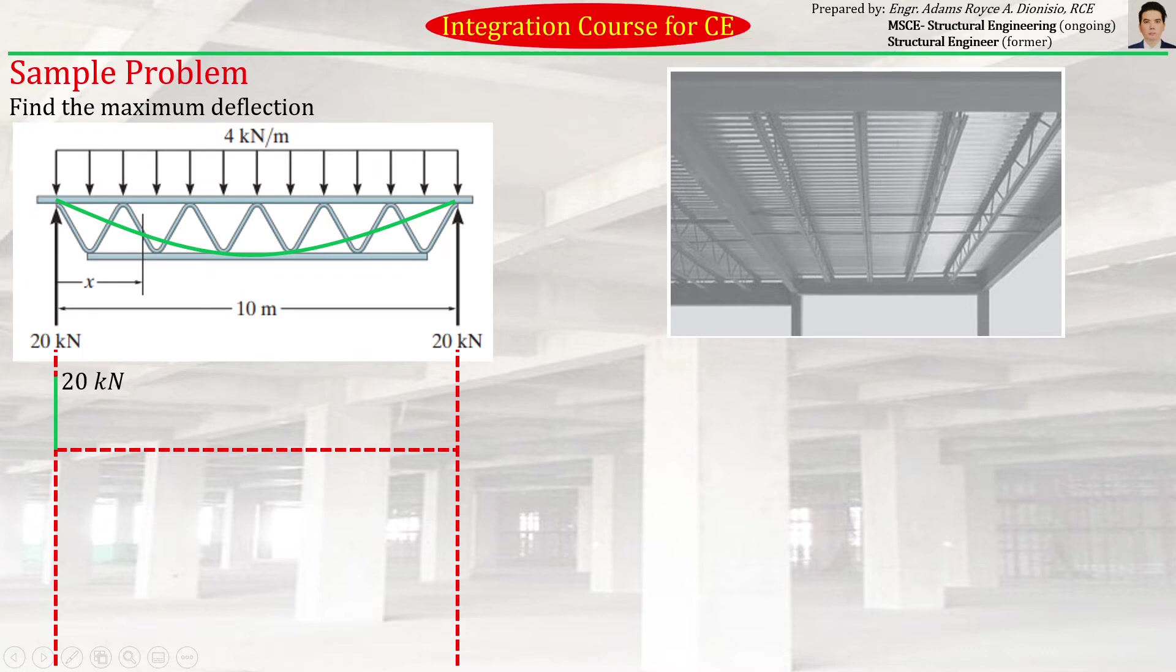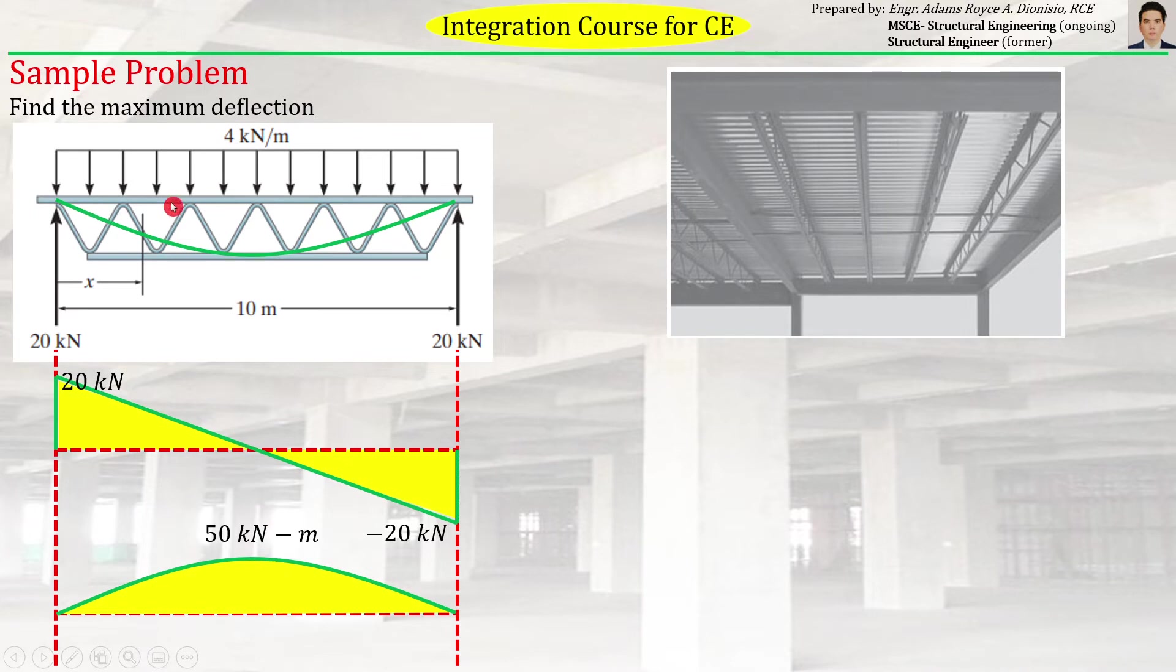If you try to imagine what will happen to the member if a uniform distributed load is acting on it, it will have an elastic curve or deformed shape similar to this. If we try to draw the shear and moment diagram, it will look something like this. This is the shear and this is the moment diagram. You can notice the shape of the elastic curve is actually the mirror of the bending moment diagram. It's actually a technique to imagine how the member will bend—the elastic curve is usually just the mirror of the bending moment diagram.